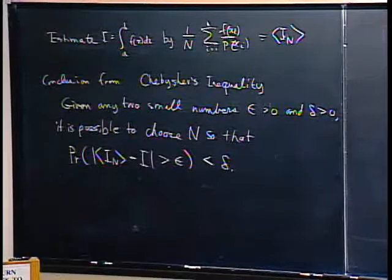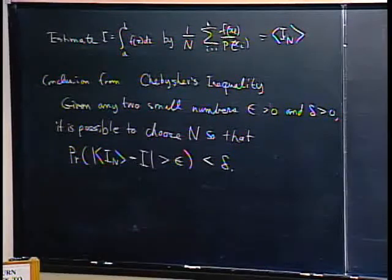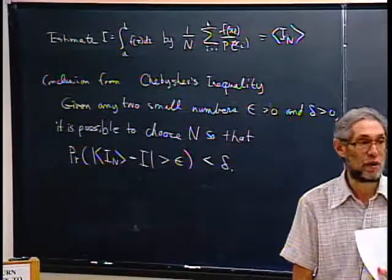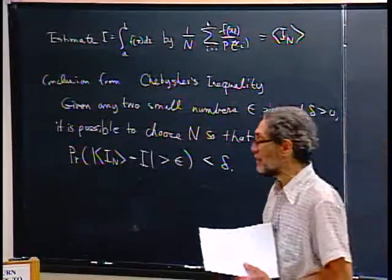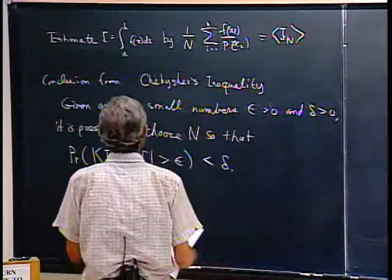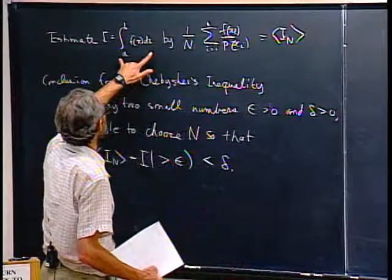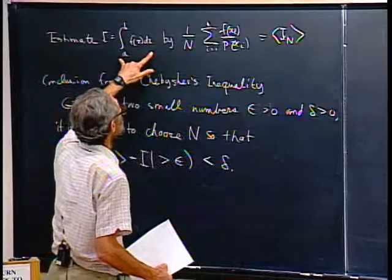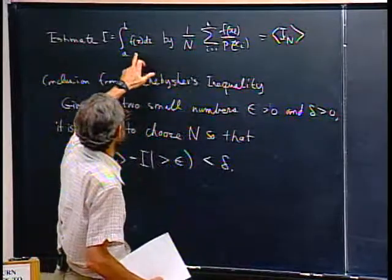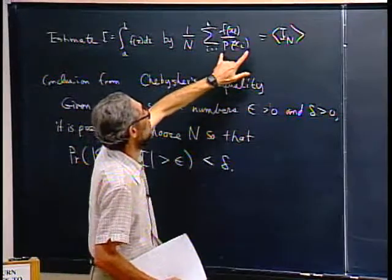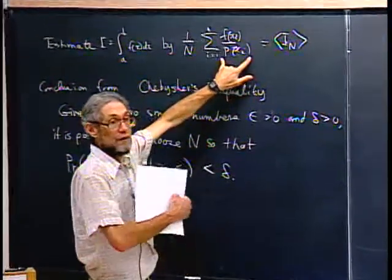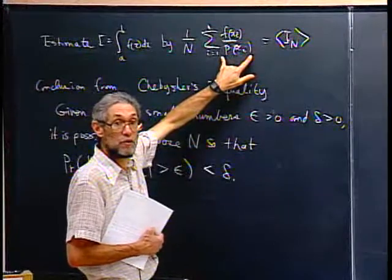Okay, are we ready? So I changed my mind about proving Chebyshev's inequality since I'm going to try to prove something else today instead. I'll just try to say what it's good for. We have this integral and we can estimate it by choosing some probability density — either uniform or, as I'll talk about today, maybe non-uniform will be even better.